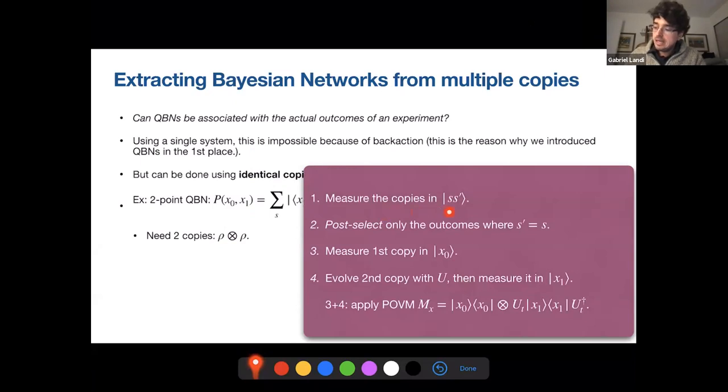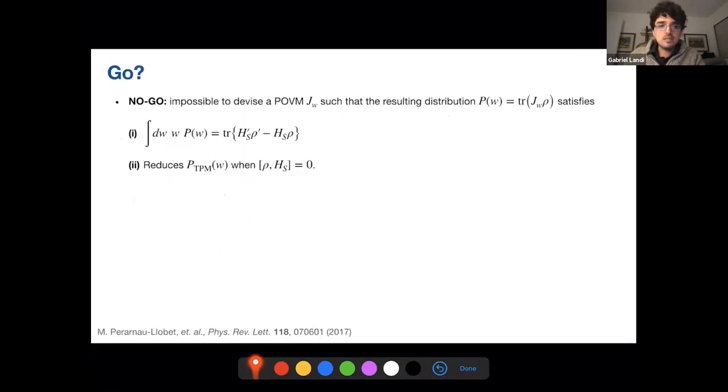So first, we measure the copies in the eigenstates of the density matrix. So in the eigenstates of rho. And then we post-select. This is the crucial step. So we do a post-selection. We throw away all those experimental outcomes where we obtain different results for these two states. And then on these post-selected states, we measure the first copy in a state X0. And we then evolve the second copy and measure in X1. So the first copy, we just measure. The second one, we evolve and then measure. And the outcomes, which is equivalent to applying this POVM. So we apply a POVM projective measurement X0 in the first one and UX1 in the second one. And so this will yield exactly this quantum Bayesian network. So the trick here is really post-selection. By post-selecting the outcomes on two copies, we can actually obtain this Bayesian network.